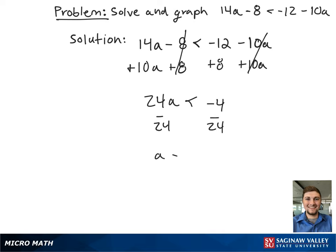This gives a is less than negative 1 sixth. On our number line, this looks like an open circle from negative 1 sixth to negative infinity, because a is less than negative 1 sixth.